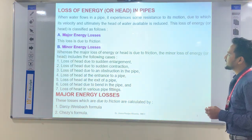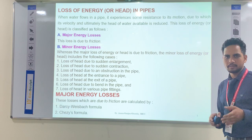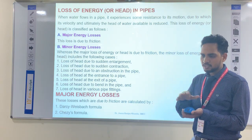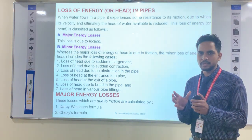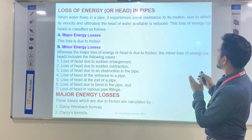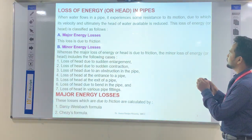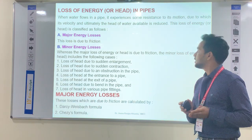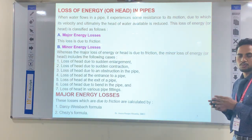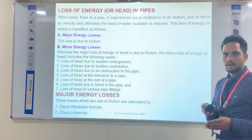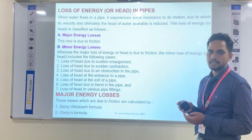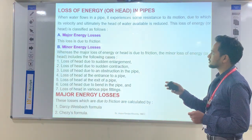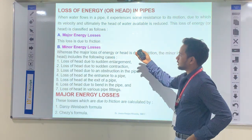When water flows in a pipe, it experiences some resistance to its motion — there is some friction. The pipe flow occurs due to pressure, and there is some resistance at the boundary. This creates resistance to the flow, due to which the velocity and ultimately the head of water available is reduced due to that friction.